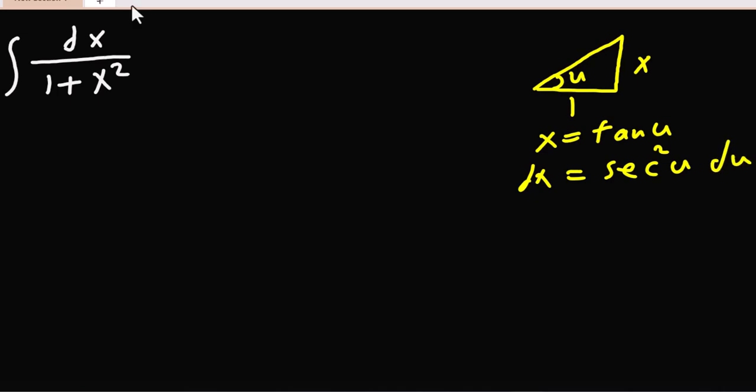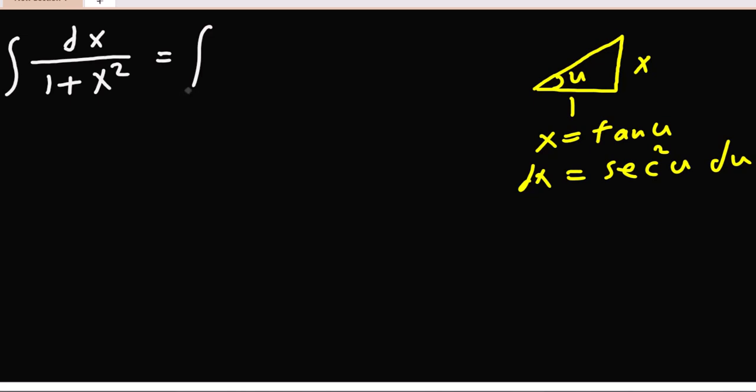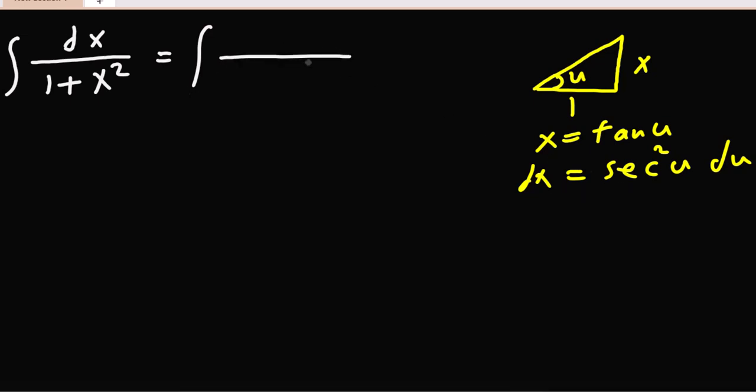So it equals integration, instead of dx we can write sec squared u du. And 1 plus, instead of x we write tan u, it becomes tan squared u.